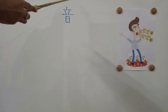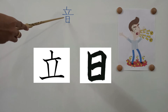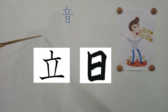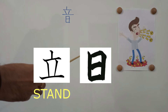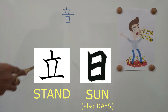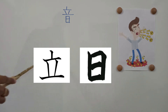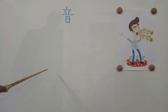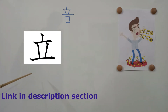If you observe closely, this kanji is a combination of two substituent kanjis. One kanji meaning 'to stand' and the other kanji which means 'sun.' The kanji on the top is 'stand' and the kanji on the bottom is for 'sun.' The kanji for 'stand' we have covered in our previous video — the link would be in the description below.